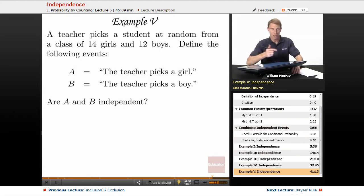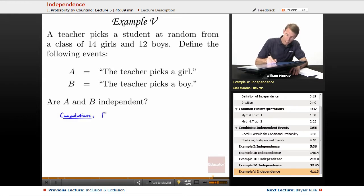Let me show you quickly the computations. So if we use computations, we're going to check whether the probability of A is equal to the probability of A given B, because that's our original definition of independence. So our probability of A is the probability of picking a girl, where there's 14 girls total, and there's 26 students total. I'm getting that by adding 14 plus 12. So 14 out of 26 is the probability that we pick a girl.